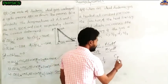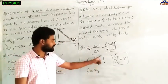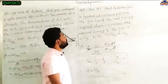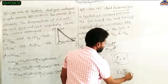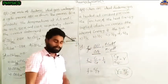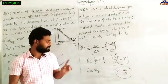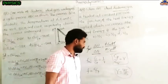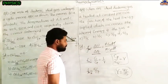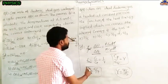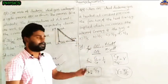For an ideal diatomic gas, γ = 7/5. So the fraction = 1/γ = 5/7. The answer is 5/7.